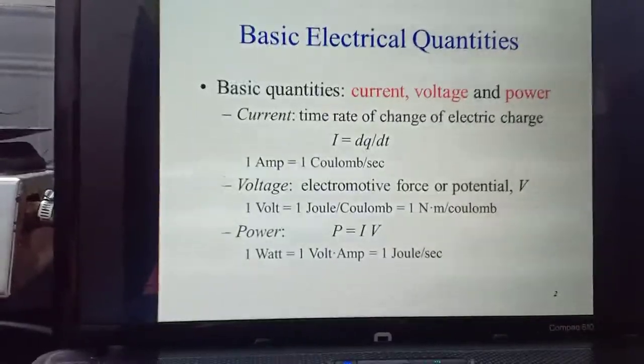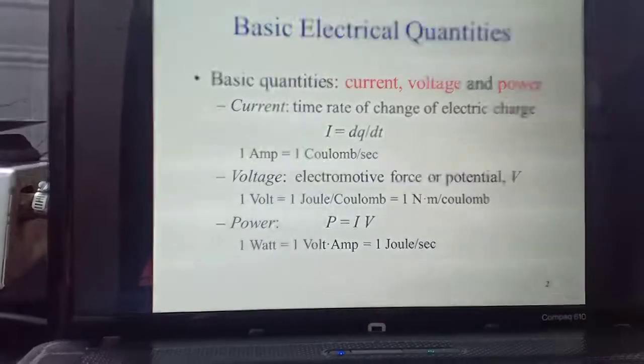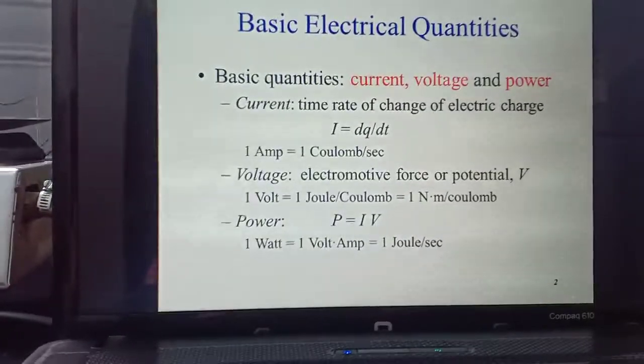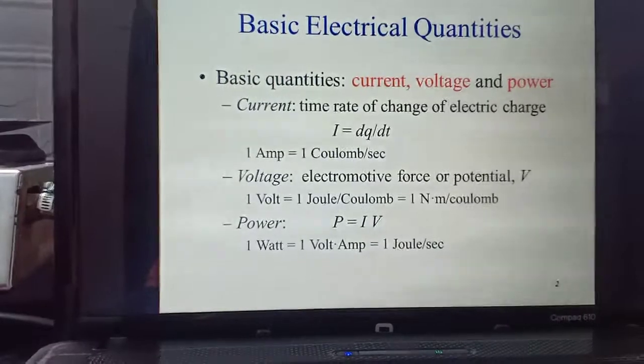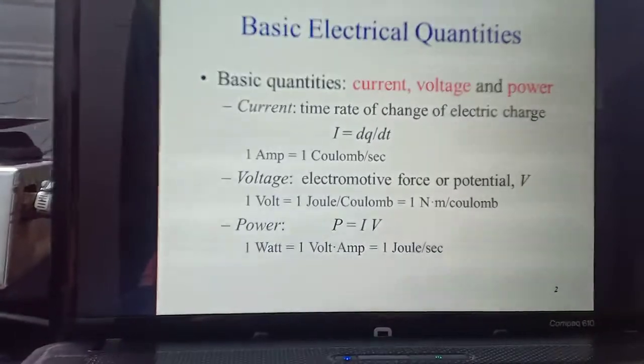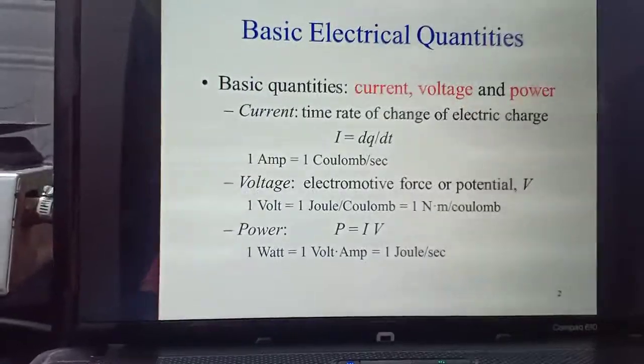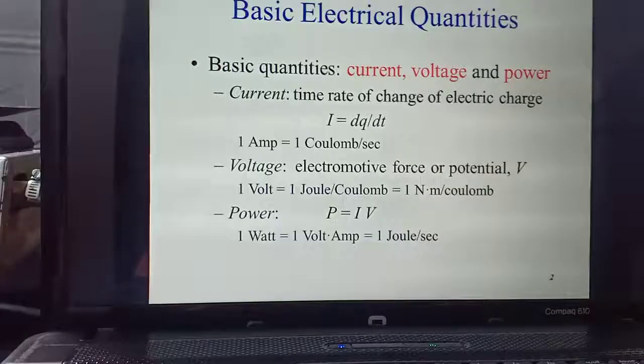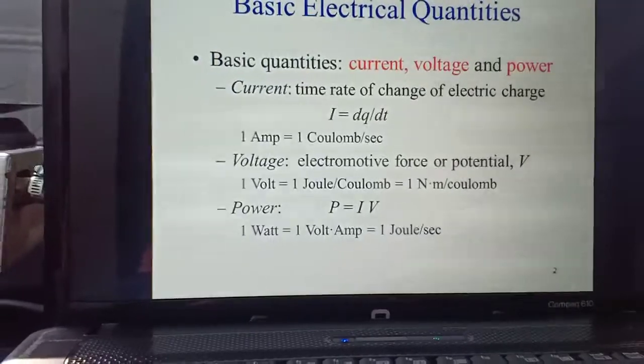So how do we find out its units? One ampere of current is equal to one coulomb charge by one second. So one coulomb per second. So what is the unit of current? Ampere. And further it can be written as coulombs per second.